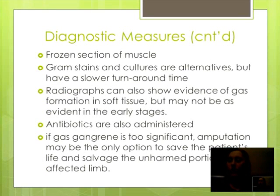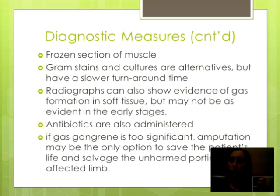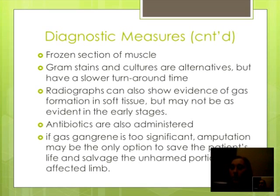Gas gangrene can spread quickly throughout the body and can be lethal if not controlled. Diagnosis can be established from a frozen section of muscle. Gram stains and cultures are alternatives to the frozen section of muscle but have a slower turnaround time. Radiographs can also show evidence of gas formation in soft tissue but may not be as evident in the early stages. Antibiotics are also administered to the patient for infection control. If the gas gangrene is too significant, amputation may be the only option to save the patient's life and salvage the unharmed portion of the limb.